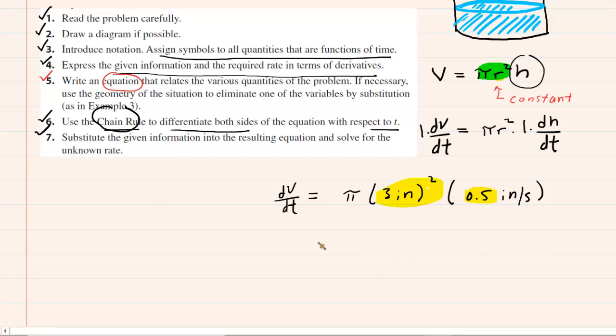So you could express the answer as 4.5 pi. If you look at the units, you're going to have inches squared times inches, which gives us inches cubed, and then per second. So it's inches cubed per second. That would be the exact answer.